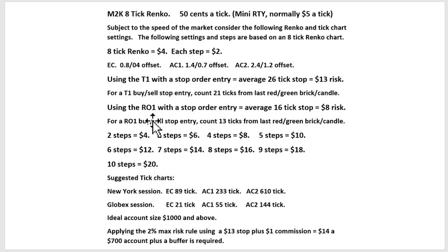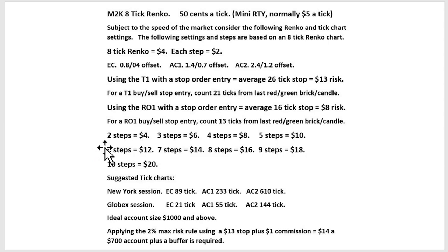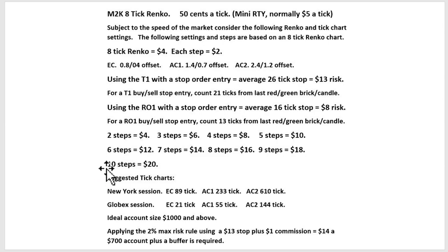There are two main trade types. The 'rule of one' — where we enter very early into a trend — gives you only an $8 risk plus commissions, compared to $13. What's important is having a daily target; without a target you're like a ship without a rudder. Each step on this size chart is worth two dollars, so we want to average between six and ten steps per trade — netting between $12 and $20 net per trade — targeting roughly $50 a day.